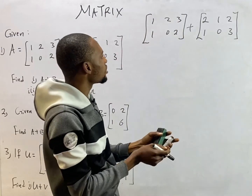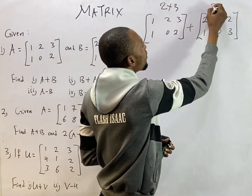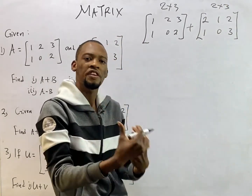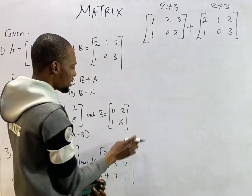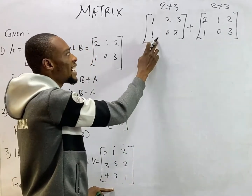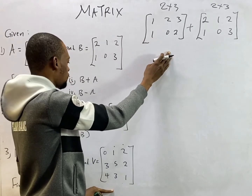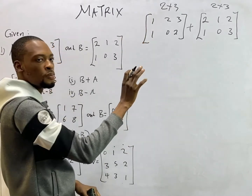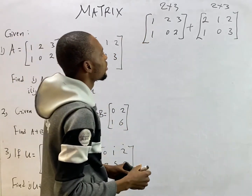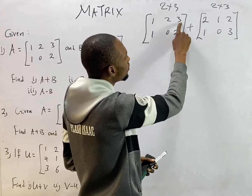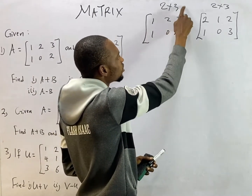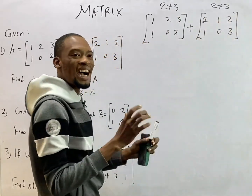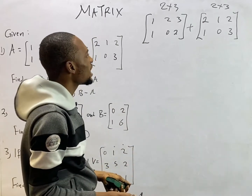We can only add a two by three matrix to a two by three matrix, and a three by three matrix to a three by three matrix. We cannot add a three by three matrix to a two by three matrix, nor a two by two matrix to a two by three matrix. They need to belong to the same order.